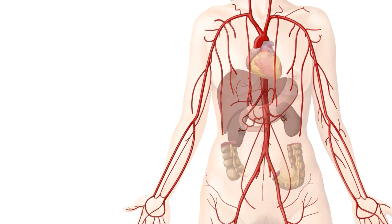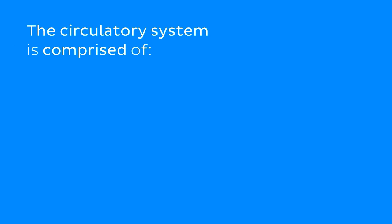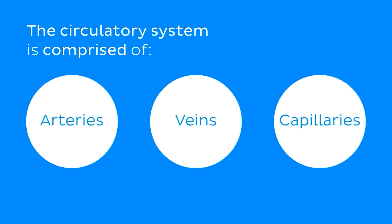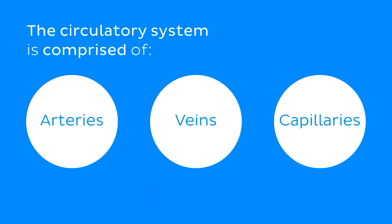Before we begin, we're going to have a brief talk through the circulatory system. In this image we're having a look at the heart and some of the major arteries making up the circulatory system. The circulatory system is the main transportation system of the body and it's made up of three types of vessels: arteries, veins, and capillaries. The vessels are filled with blood carrying gases, nutrients, and wastes. In this tutorial we're only going to be looking at the arteries.